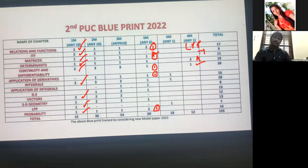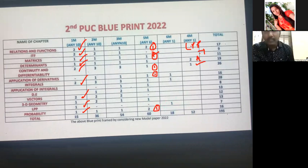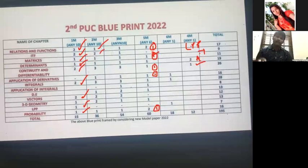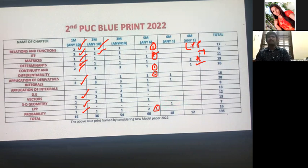For two-mark questions, choose carefully. In Relations and Functions, they may ask you to verify if a binary operation is commutative, like A star B. For ITF, standard questions — we already discussed these. For ITF trigonometry, two questions are easy. They may give one proof like: prove that 2 sin⁻¹x = sin⁻¹(2x√(1−x²)), or prove that 2 tan⁻¹x = a related property.